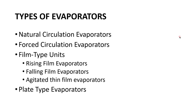There are various types of evaporators available, which all use the basic principles of evaporation but work in slightly different ways. For example, there are natural circulation evaporators, forced circulation evaporators, and film type units such as rising film evaporators, falling film evaporators, and agitated thin film evaporators, as well as plate type evaporators.